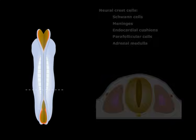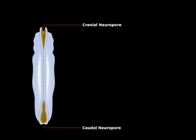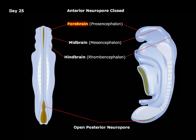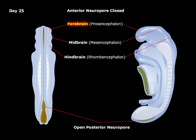Before the fusion of the neural tube is complete, the cephalic and caudal ends communicate with the amniotic cavity through the cranial and caudal neural pores. The cranial neural pore closes on day 25. After closure, the cranial end of the neural tube develops into three primary vesicles: the forebrain or prosencephalon, the midbrain or mesencephalon, and the hindbrain or rhombencephalon.